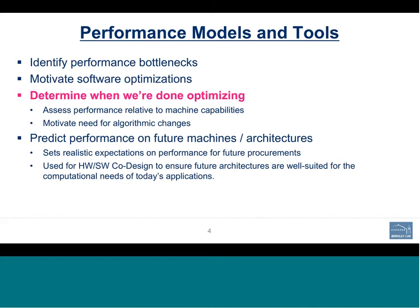Moreover, we can actually assess our application's performance relative to the actual machine capabilities, rather than simply saying we're 10 percent faster than we used to be. We can say we're within 90 percent of the machine's peak. Once we get there, we can use the roofline at that level of performance to motivate algorithmic changes — once we're using the full capabilities of the machine, the only way to get better performance is to make fundamental algorithmic changes.